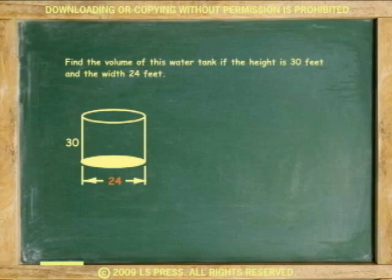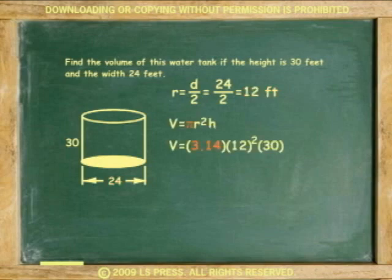The width of the cylinder is the diameter. Because the radius is needed, r equals 12 feet. We calculate 3.14 times 12 squared times 30 equals 13,564.8 cubic feet.